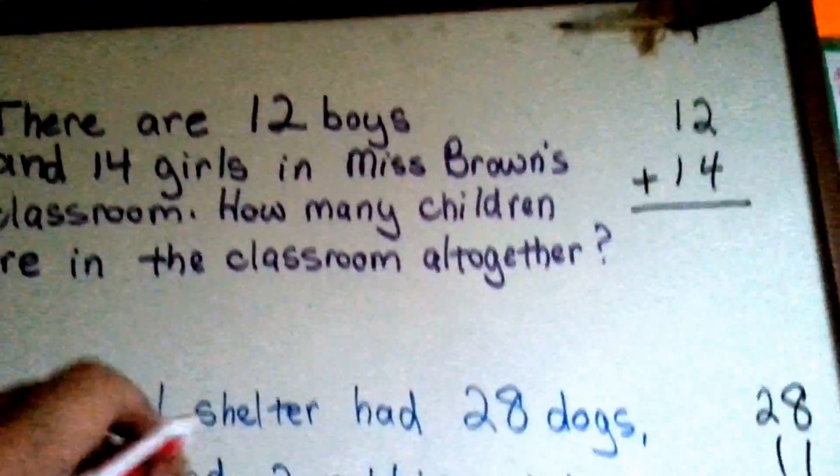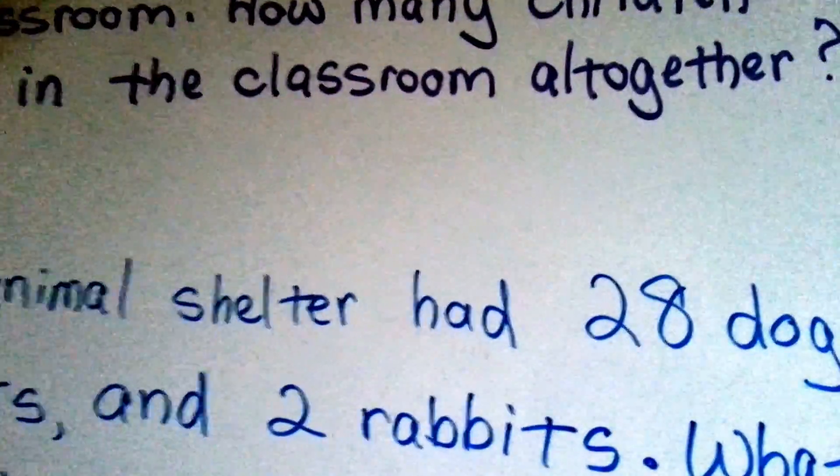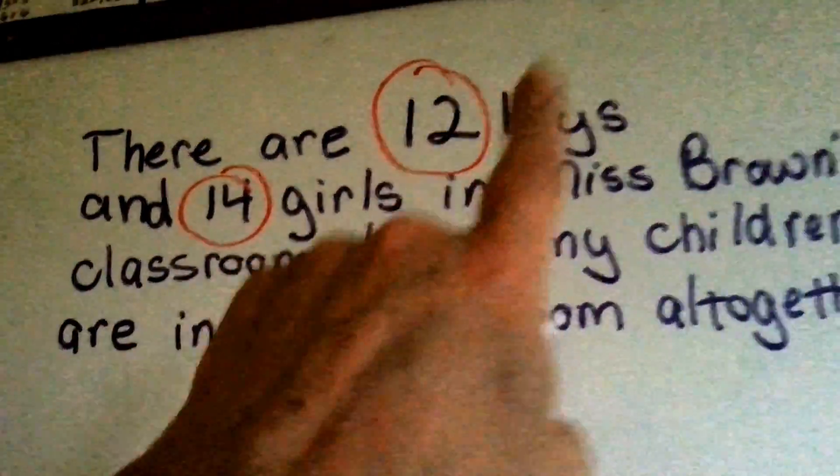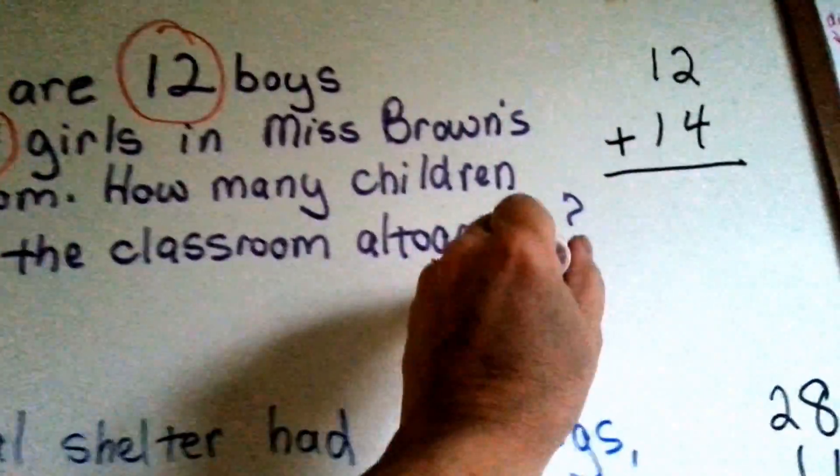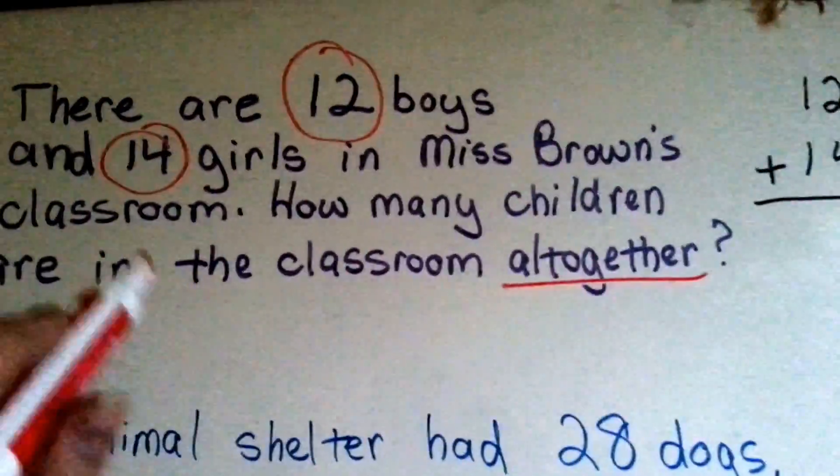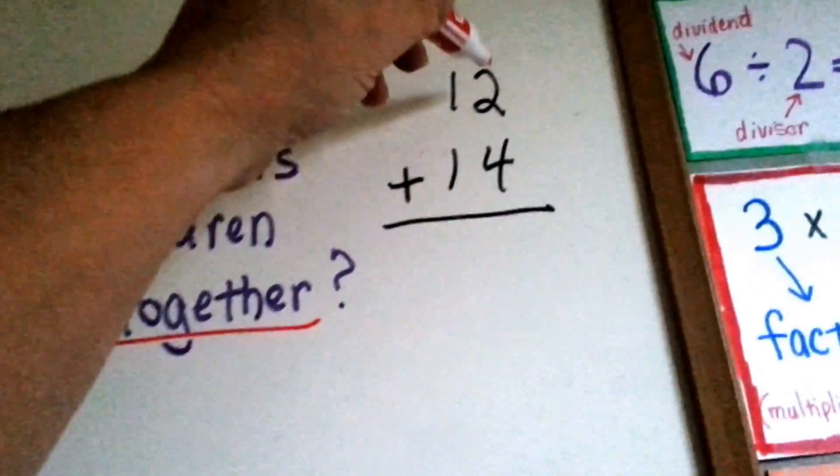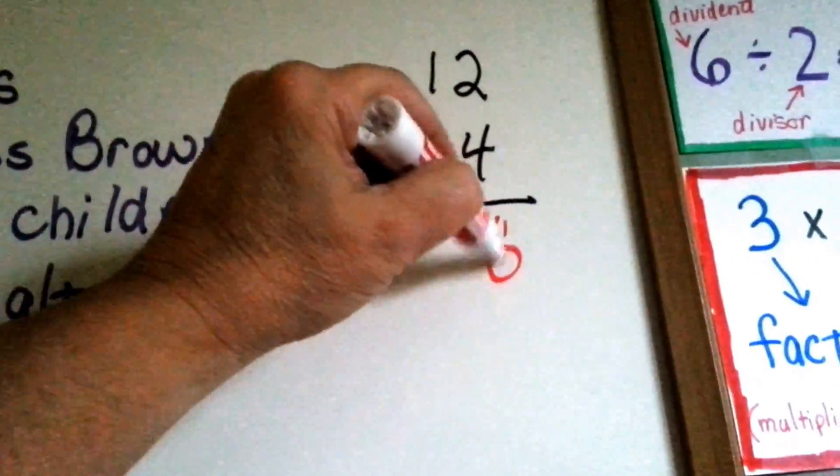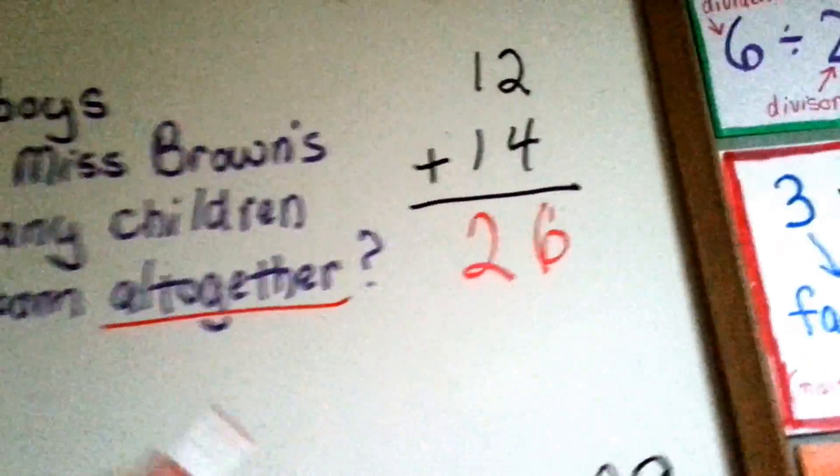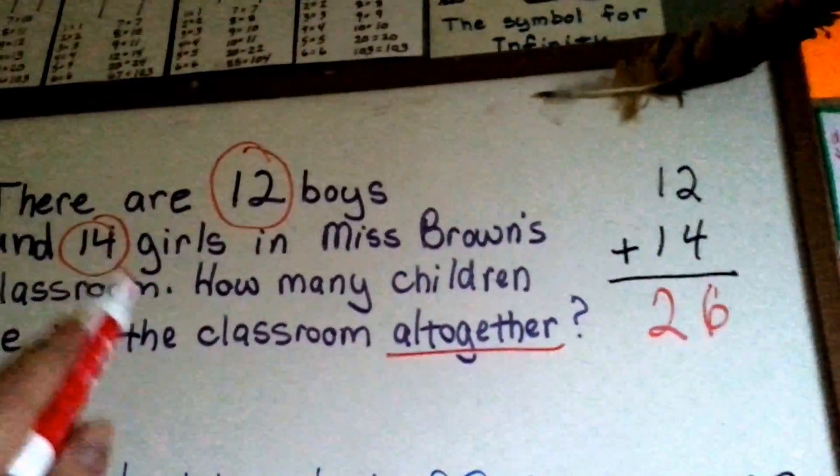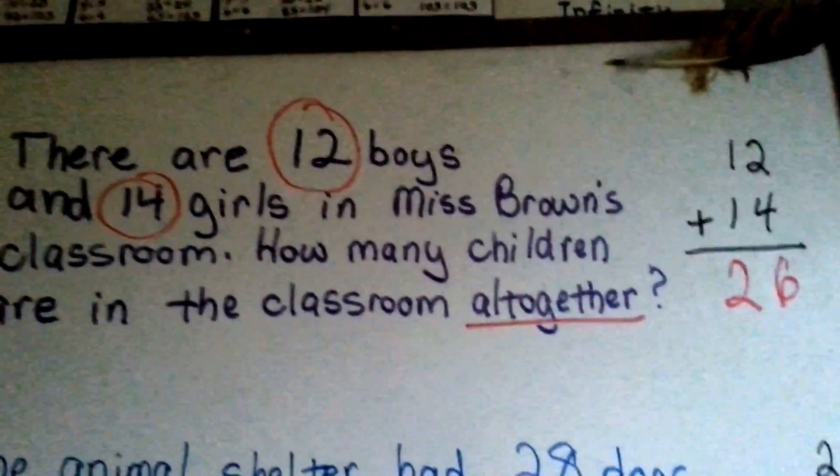What we would do is, we would take the important numbers, twelve and fourteen, and we see the word ALL TOGETHER, and we know we need to add twelve plus fourteen. Two plus four is six. One plus one is two. We know there are twenty-six children ALL TOGETHER in Miss Brown's classroom.